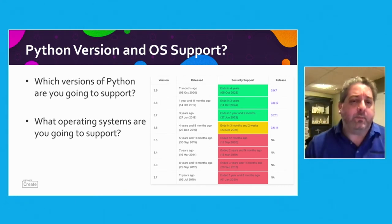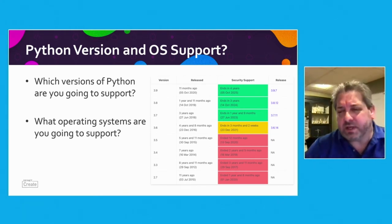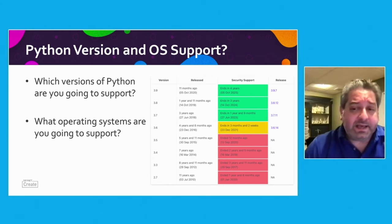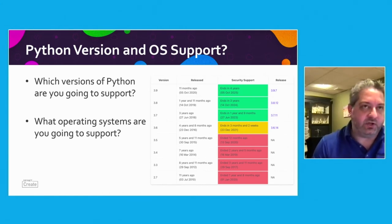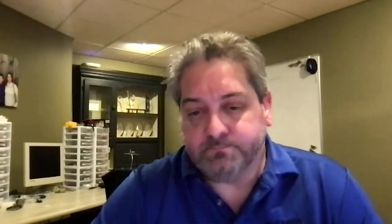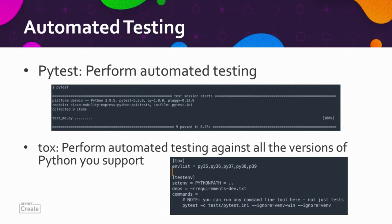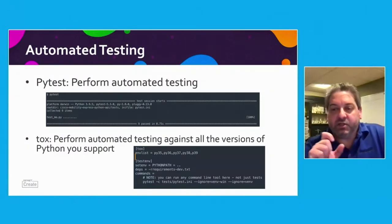The other question is what operating systems you're going to support. Python is generally operating-system agnostic unless you're calling particular system functions — there are functions applicable to Unix-based systems or Windows-based systems. Once you decide which operating systems you're going to support, you'll want to make sure you do automated testing of your library under all of those operating systems. I'm using PyTest to test all the modules provided by the API and validate that each method returns what's expected — for example, calling the API to blink access points, get system information, get AP information, and so on.